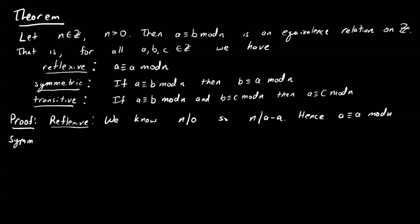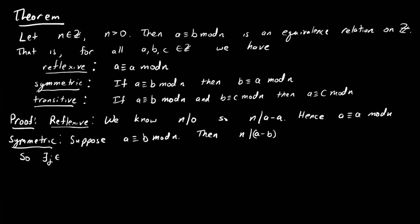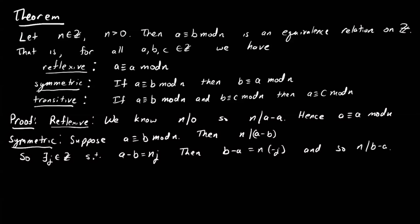Let's show that it's symmetric. Suppose that a is congruent to b modulo n. We know then that n must divide a minus b. By the definition of divides, there exists an integer j such that a minus b equals n times j. If I multiply both sides by negative 1, I get that b minus a equals n times negative j. So n divides b minus a, and hence b is congruent to a modulo n. We have symmetry.